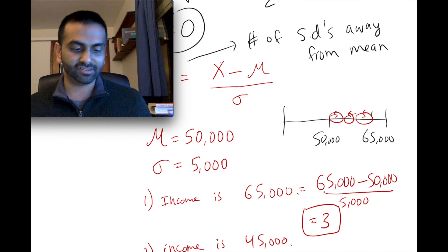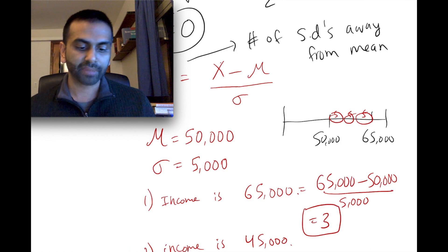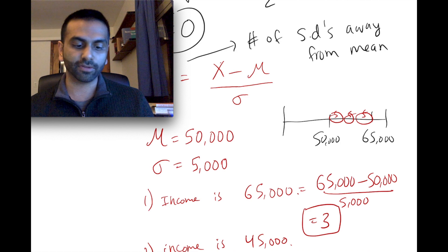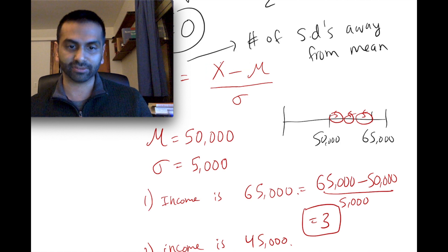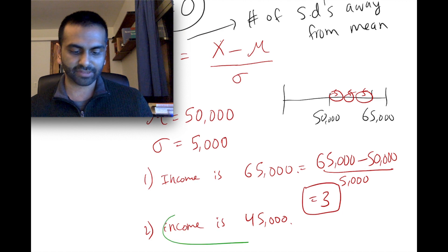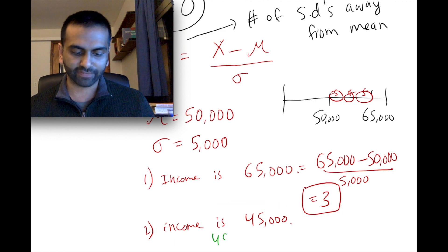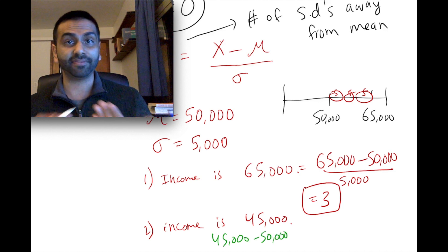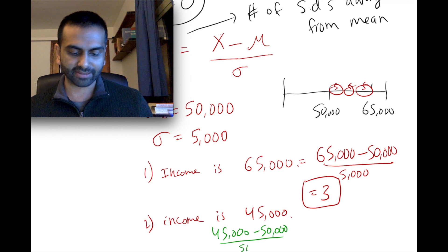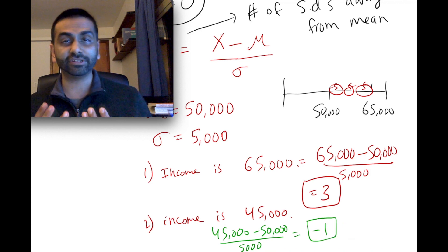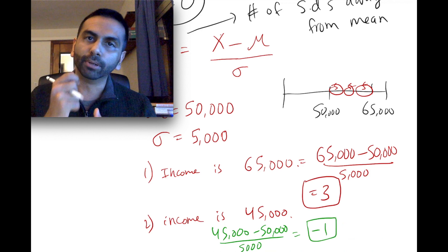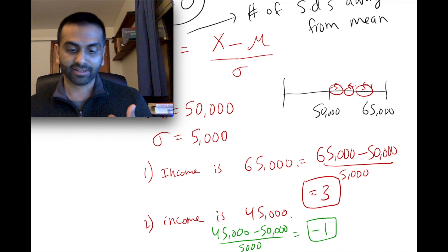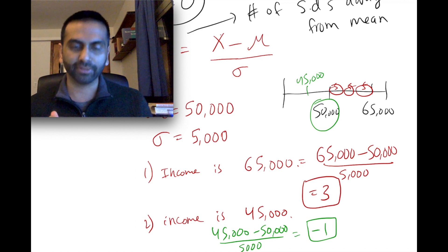Notice that unlike standard deviation, z itself can be positive or negative depending on whether you're above or below the mean. For example, if your income is $45,000: (45,000 − 50,000) / 5,000 = −5,000 / 5,000 = −1. Your z-score is −1, meaning you're one sigma below the mean. That makes sense — at $45,000 you're exactly $5,000 below the mean of $50,000, which is one sigma.